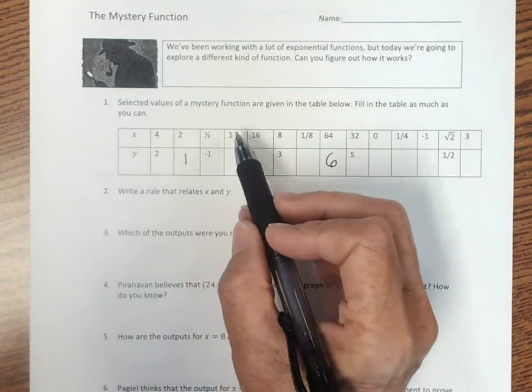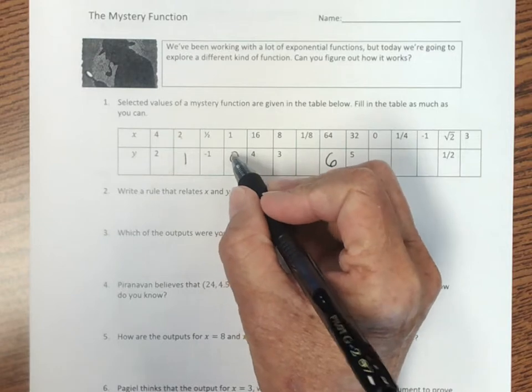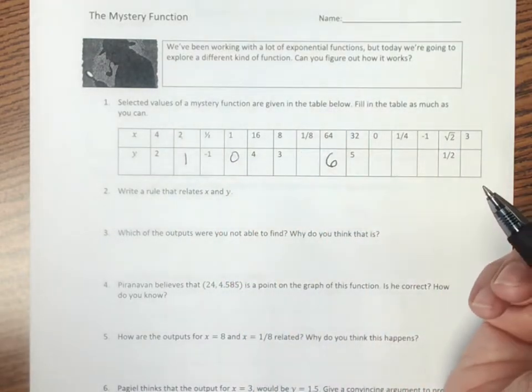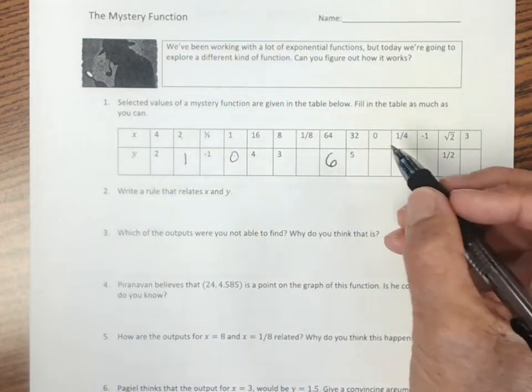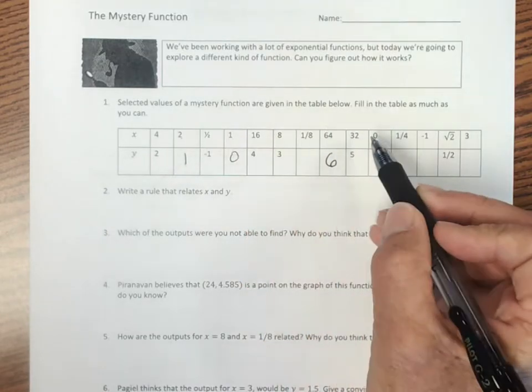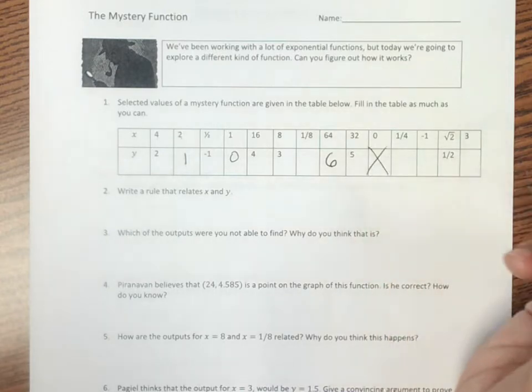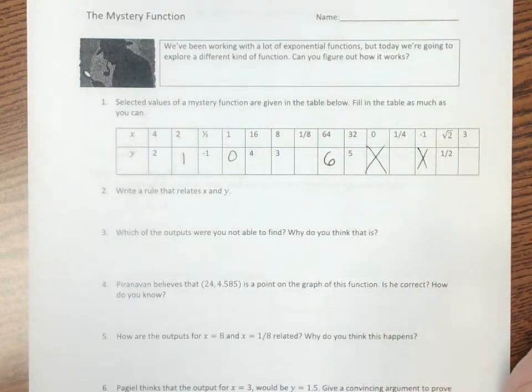Likewise, 1 to 2 is doubling it, so this value here should be 1 less, and that's a 0, and that's true. So those all work. This 0, though, if I can't get to half here, this one does not have a value. So we're going to leave that blank. This one does not have a value.